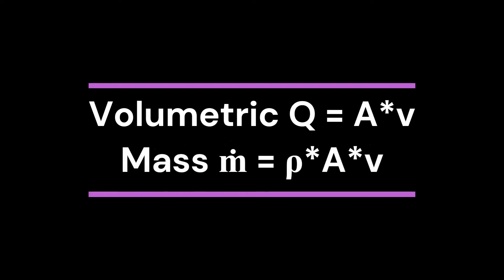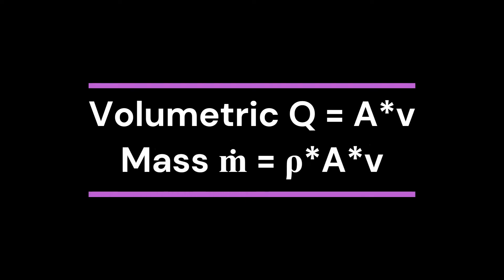Volumetric flow rate, symbolized as Q, has a formula of the cross-sectional area of the pipe times the velocity of the fluid. Mass flow rate, on the other hand, has a formula of the fluid's density times the cross-sectional area of the pipe times the fluid velocity.